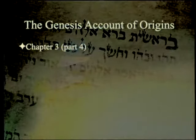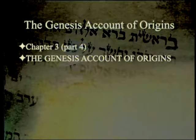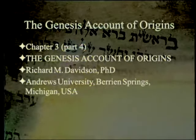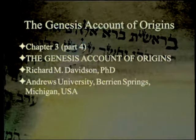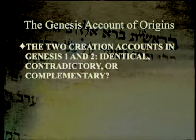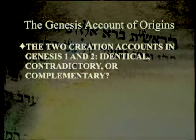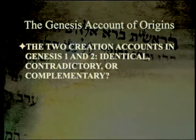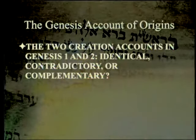The Genesis Account of Origins, Chapter 3, Part 4. We've been through Parts 1 through 3 earlier, and this is written by Richard Davidson at Andrews University. I admire his writing — there is no spare verbiage. Our first topic is: The two creation accounts in Genesis 1 and 2 — Identical, Contradictory, or Complementary? There will be two major topics, then a minor topic, and others at the end.